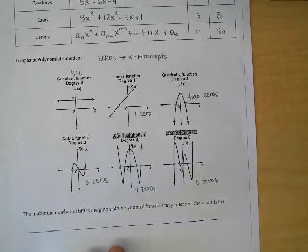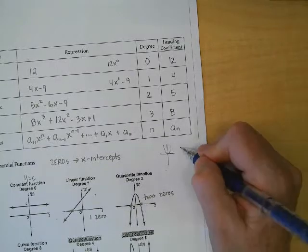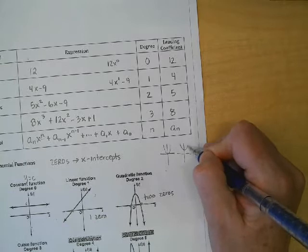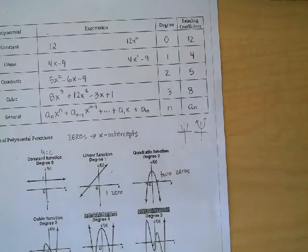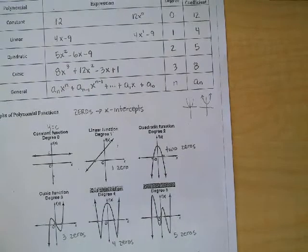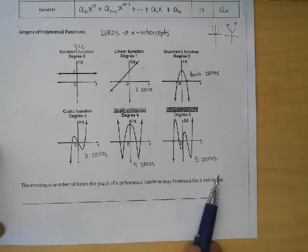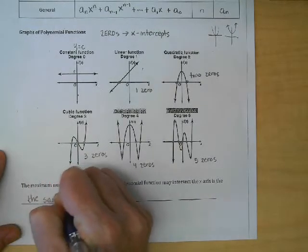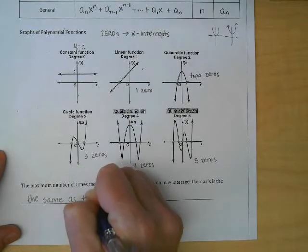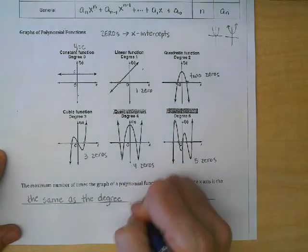If you think about from math 2, I could have something that looked like that with just one zero, and I could have something that looked like that with no zeros. So that number tells us the maximum number of zeros it can have. The maximum number of times the graph of a polynomial function may intersect the x-axis is the same as the degree of the polynomial.